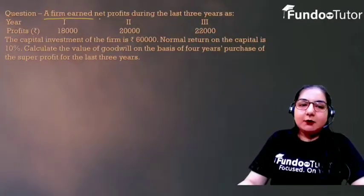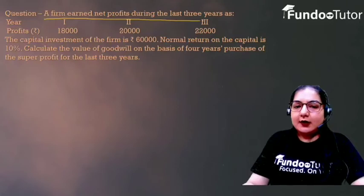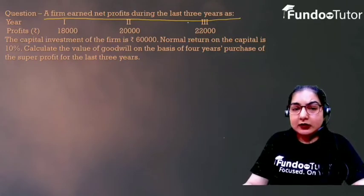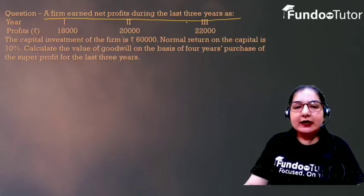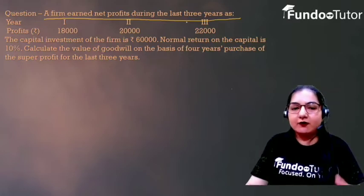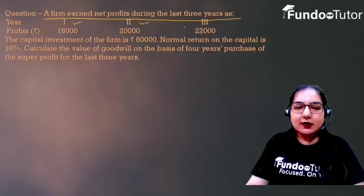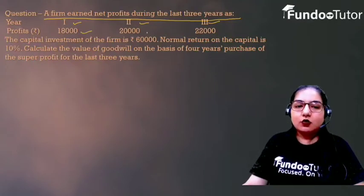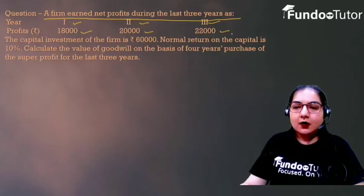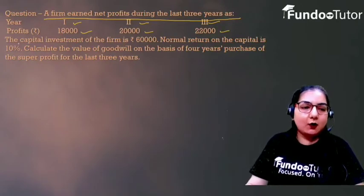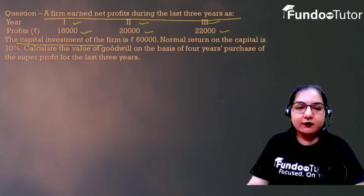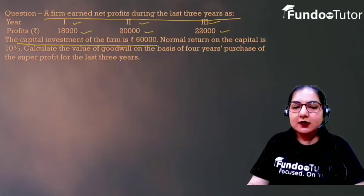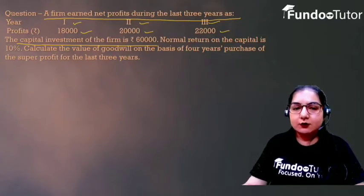A firm earned net profits during the last three years. We have the profits of the company's last three years: First year Rs. 18,000, second year Rs. 20,000, and third year Rs. 24,000. The capital investment of the firm is Rs. 60,000.